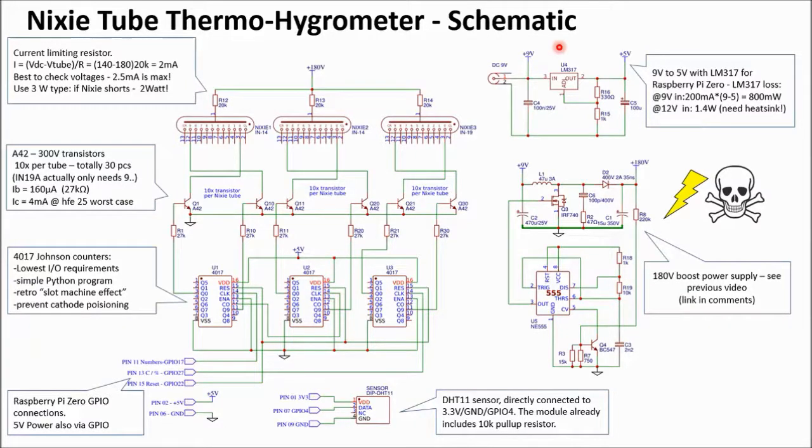Then I use an LM317 to convert 9V from the adapter to 5V which is used for the Raspberry Pi. If you use a 9V adapter, the power loss is still quite low, about 0.8W. If you choose to use a 12V adapter, then the power loss becomes about 1.4W, so you will need a heatsink on the LM317. Also be sure to keep the LM317 away from the DHT11 sensor, otherwise you will mess up your temperature reading.